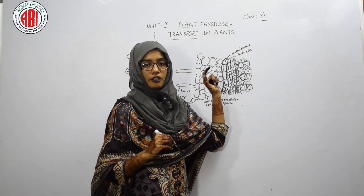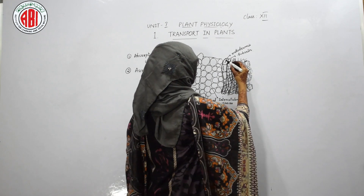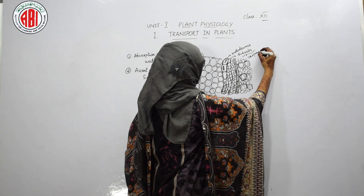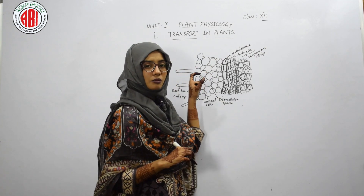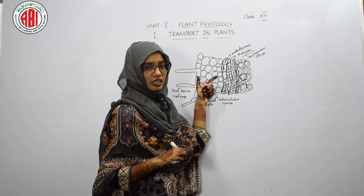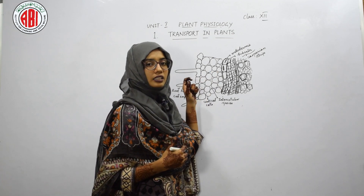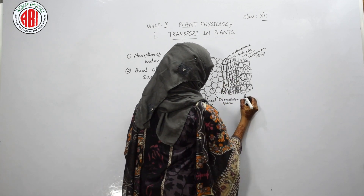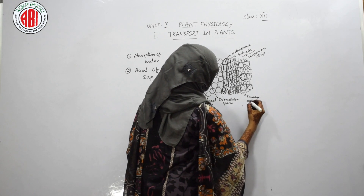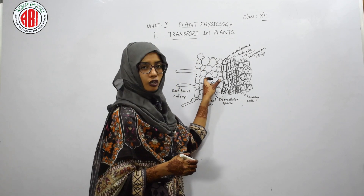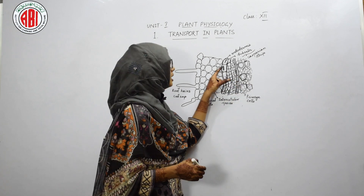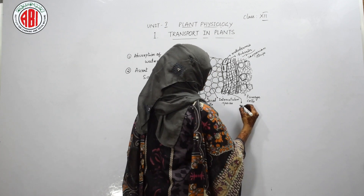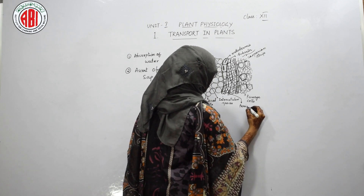The layer of thickened walls in the endodermis is termed Casparian strips. Some cells in the endodermis are present without these thickenings — without the suberin material — and these are called passage cells. Passage cells act as a barrier controlling water movement toward the inner side. Next to the endodermis, compact cells are present forming the pericycle.